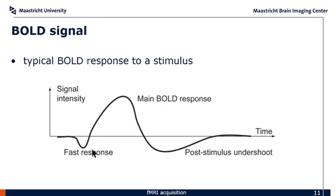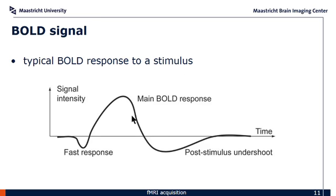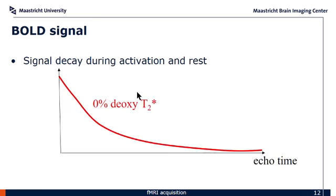We have a washout of deoxyhemoglobin, which leads to an increase in the T2* relaxation time that we measure, and that causes a net signal increase during activation — somewhat contrary to what you might naively expect. What you get at the end of the day is a hemodynamic response to a stimulus: a small initial dip as deoxyhemoglobin goes up, then the flow increase washes out the deoxyhemoglobin giving a positive signal, and then afterwards there's a post-stimulus undershoot. What we use in fMRI is measuring this main positive signal increase during activation.